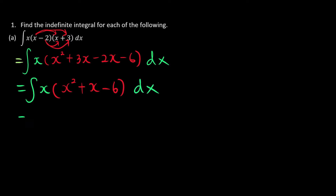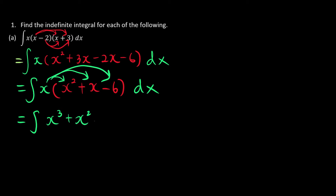Now we can just expand our x into the bracket. x times x squared becomes x cubed. x times x, we have x squared. x times negative 6, we have negative 6x, with respect to x.